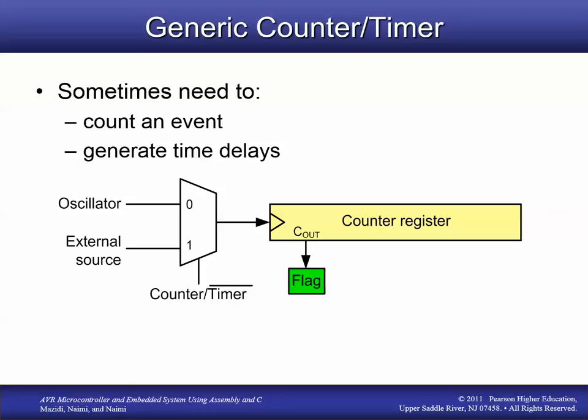Once the counter reaches its maximum value or another predetermined value, it raises a flag. That flag can tell the microcontroller when to perform a certain action. For example, after 50 bottles come down the line, we might want to extend an actuator or stop the conveyor belt. When the counter reaches 50, it sets a flag, and the program can automatically handle that event.